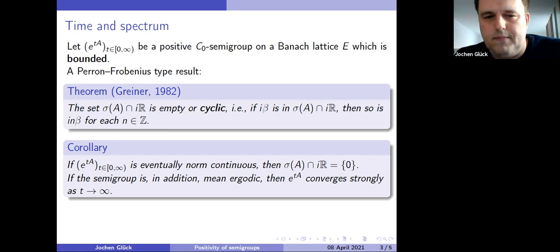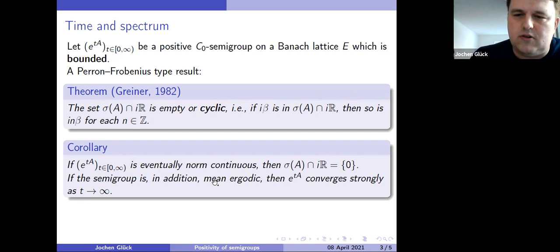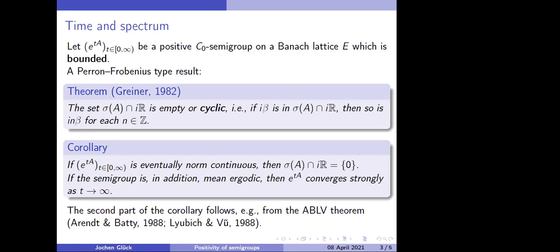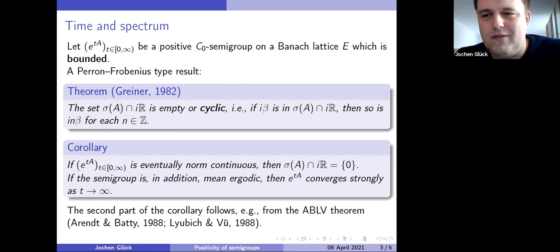And one remark, so how precisely do we obtain strong convergence? Well, if you want to use an overkill argument, you can refer to the ABLV theorem, which is proved by Wolfgang Arendt and Charles Batty, which are both here, 1988, and also independently by Lyubich and Vũ, Mathematische Annalen, also 1988. That's a theorem in the uniform ergodic theory of semi-groups. You can apply it in the situation to obtain strong convergence from the mean ergodicity and the spectral condition.